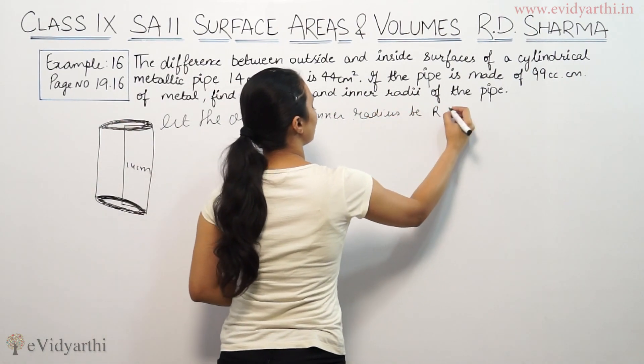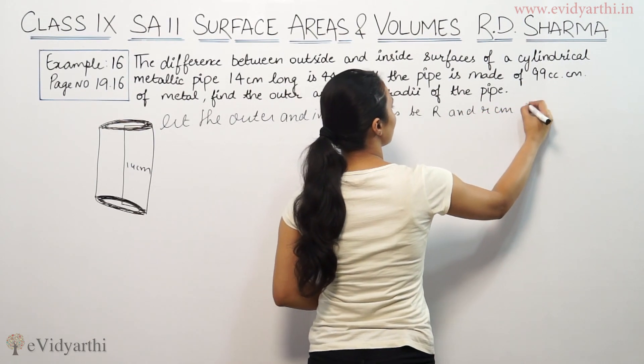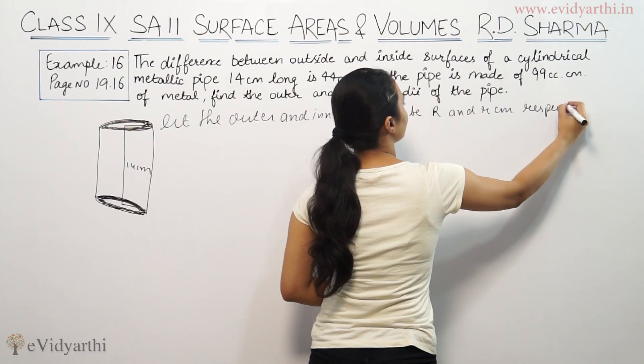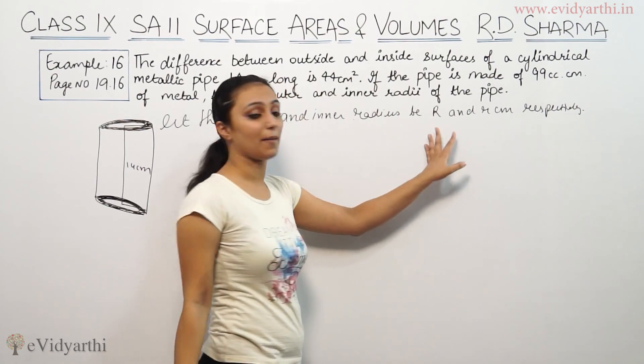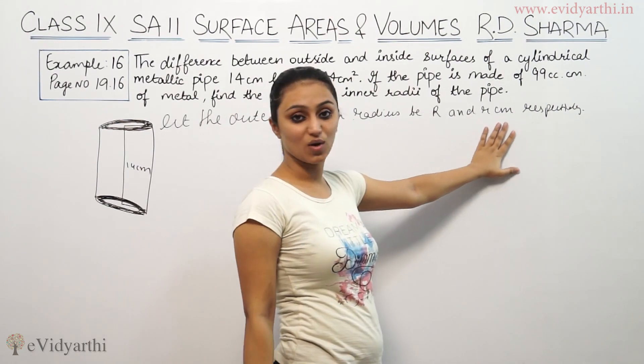So I will put the outer radius and inner radius as R and r cm respectively. Outer radius is capital R and inner radius is small r.